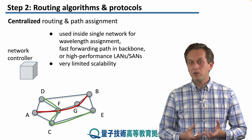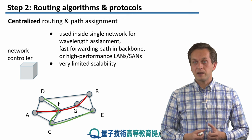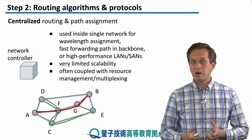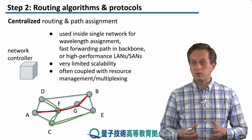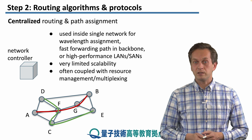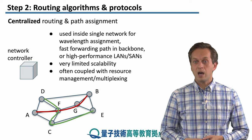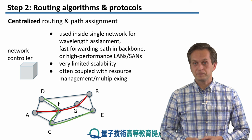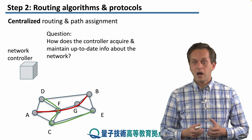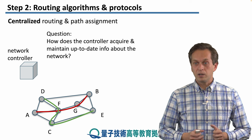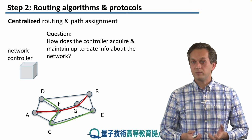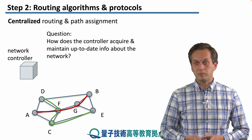Because everything is centralized, scalability is very limited. It is often coupled with resource management and multiplexing, since all knowledge about the network is contained in a single controller which makes decisions on errors and multiplexing. But we have still not answered the question: how does the network controller gain all the information about the network? This question must be solved before designing any quantum network.